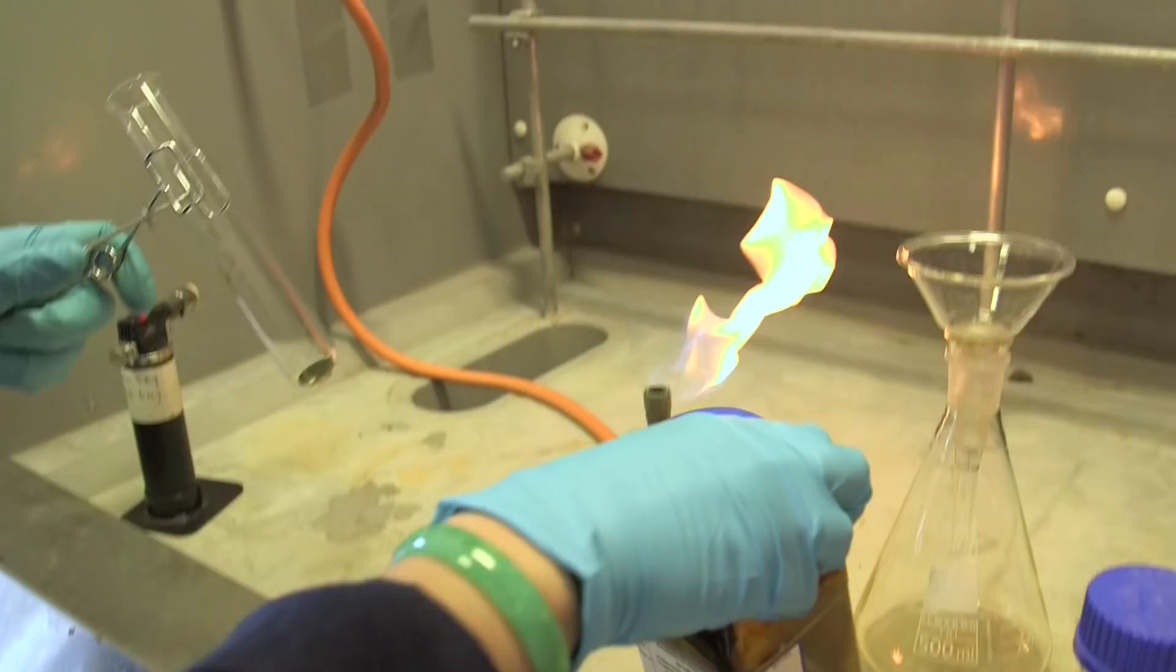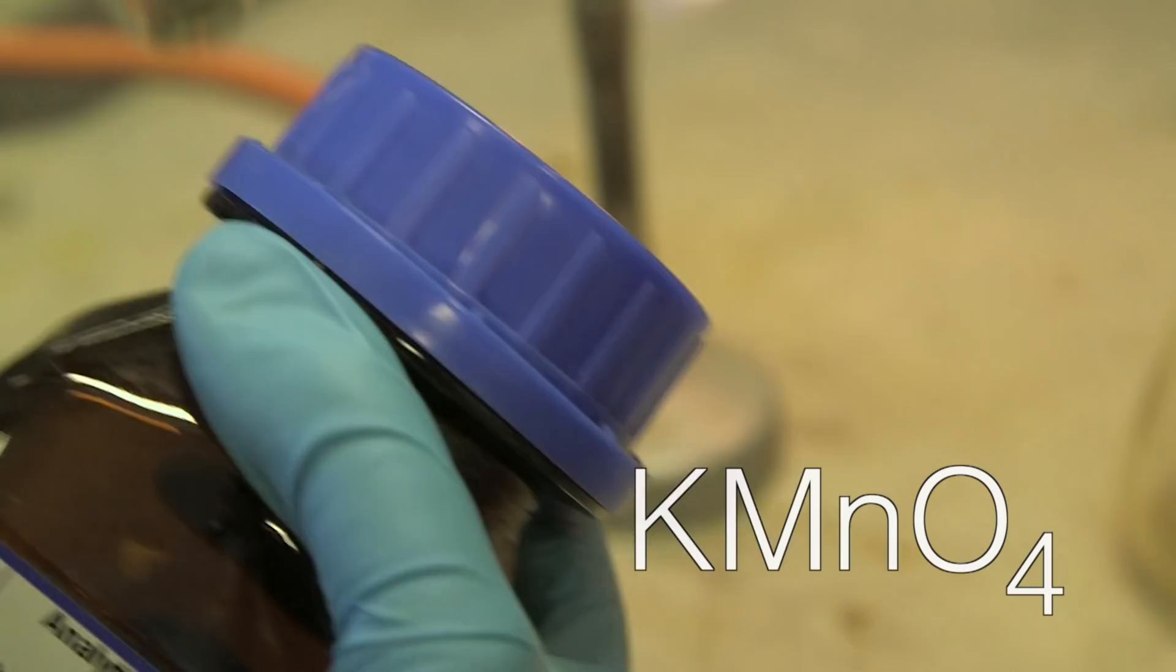All I've gone and done is just popped a couple of spatulas of potassium permanganate into the boiling tube. And as you can see from the color, it's a very, very dark, almost black, possibly a dark green. So that's in there.